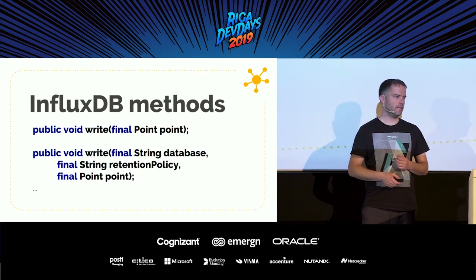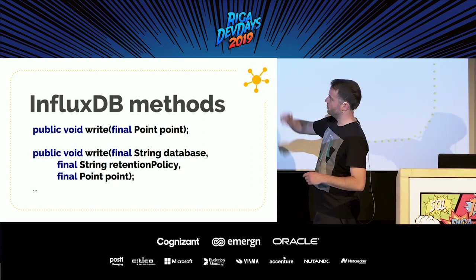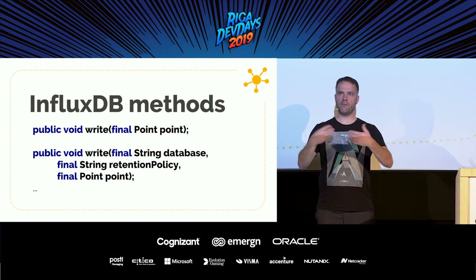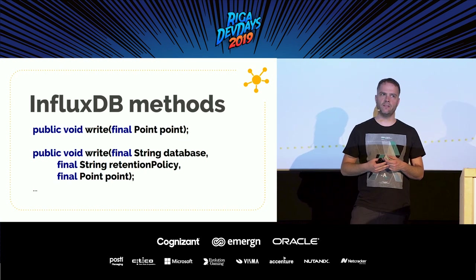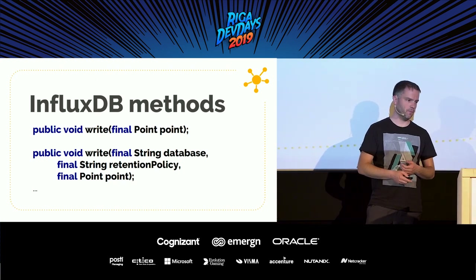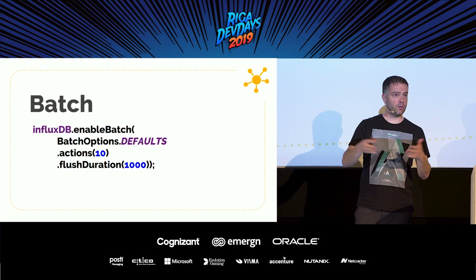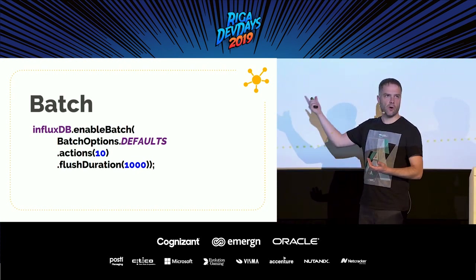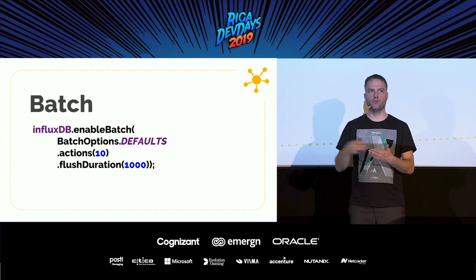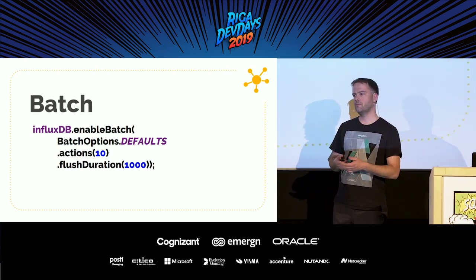We have a few methods on the InfluxDB client — write a point, or write a point with extra stuff like specifying the database and the retention policy. So I can specify that data is only stored for a month — if you have a lot of data but are only interested in the latest month, you can specify a retention policy so data is automatically removed after a certain period. If you have lots of points and maybe a network connection in between, it can be useful to batch them — it batches a set of points together and sends them in one request to the database instead of multiple queries.